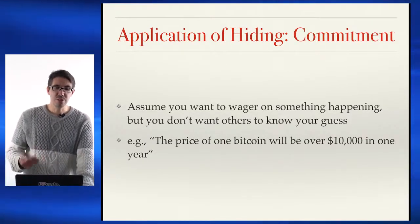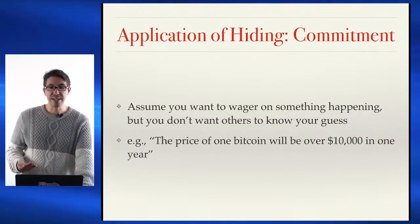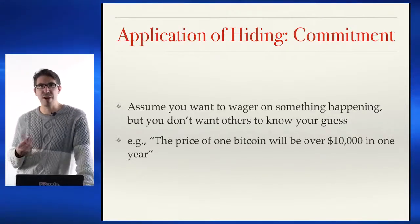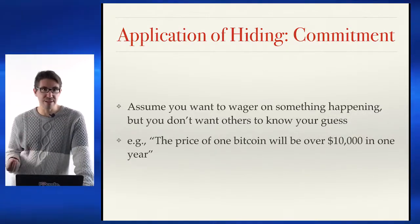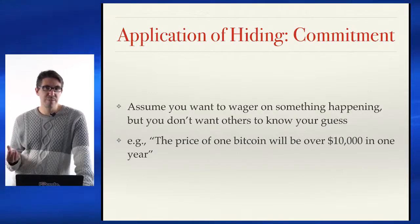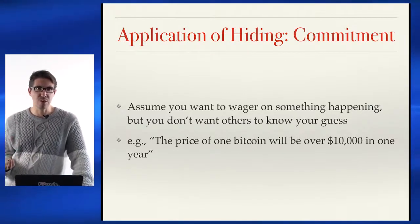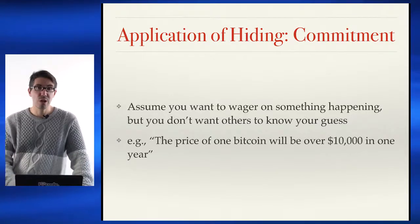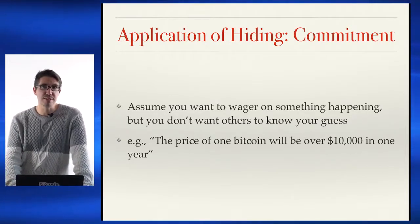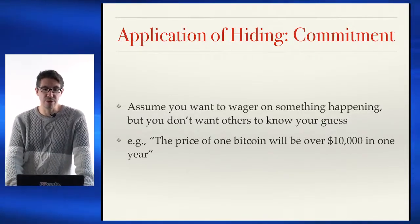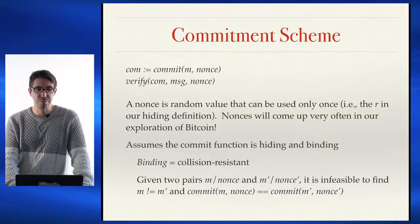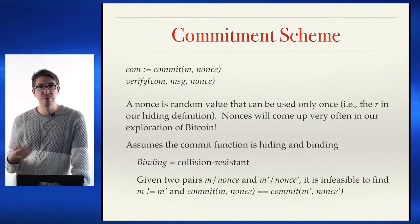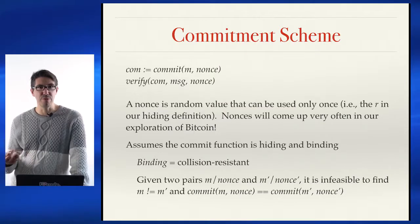If we do have a good cryptographic hash function, we can use hiding to create what's called a commitment scheme. So let's assume you would like to wager on something, but you don't want others to know your guess — for example, the price of Bitcoin will be over $10,000 in one year. A commitment scheme will allow you to do this and later reveal what your message was in a verifiable way.